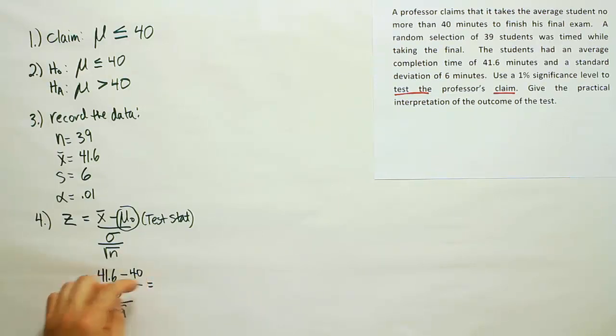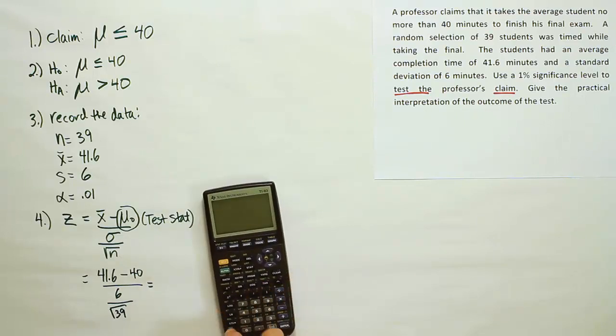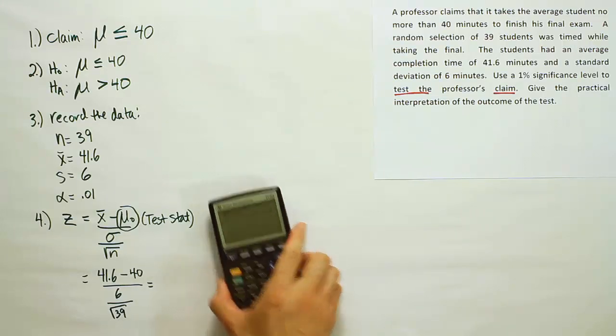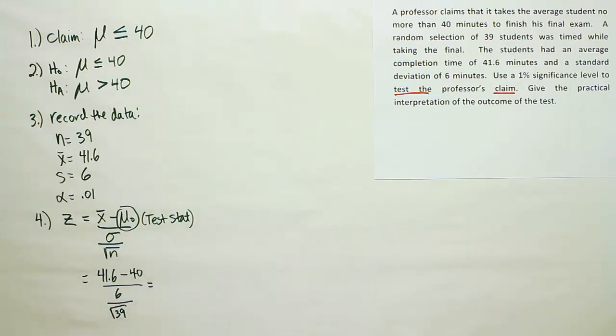Of course, this difference on top is 1.6. And then you'll divide that by 6 divided by the square root of 39. All right. Let's just do the whole thing though all at once. I'll put the top part in parentheses 41.6 minus 40. Close it up. Divide by parentheses 6 divided by the square root of 39. Okay. Entered it all in and my calculator gives me 1.67. Okay. So there's my test statistic.